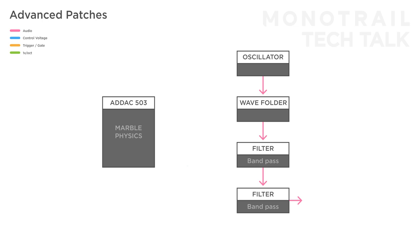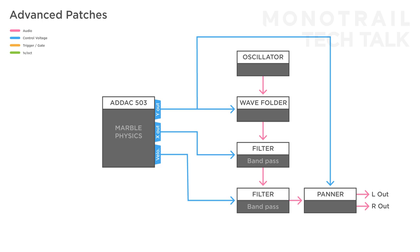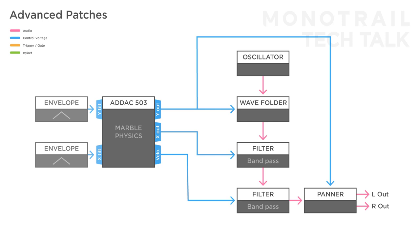In this patch, a voice is made with an oscillator, wave folder, and two bandpass filters. The Y output is modulating the folder, the X output the first filter, and the velocity the second filter. For stereo effect, the voice is sent through a panner, and a copy of the Y output is used to modulate it. To get the marble moving, slow looping envelopes are modulating the X and Y tilt, and again a sample and hold signal is occasionally triggering the bump. The speed and elasticity settings are really nice to tweak.